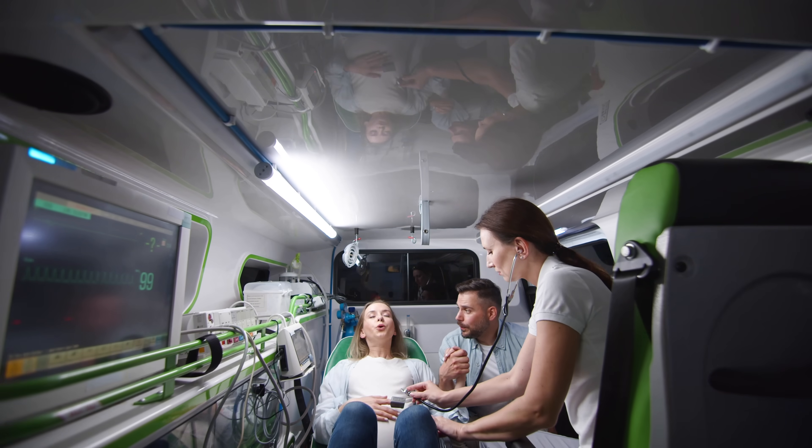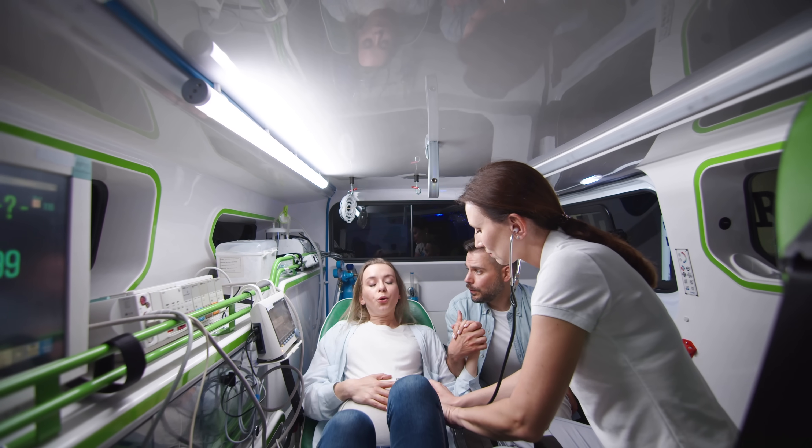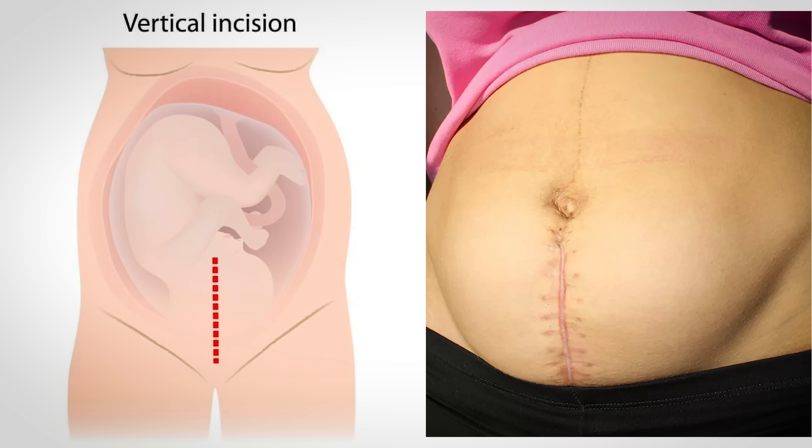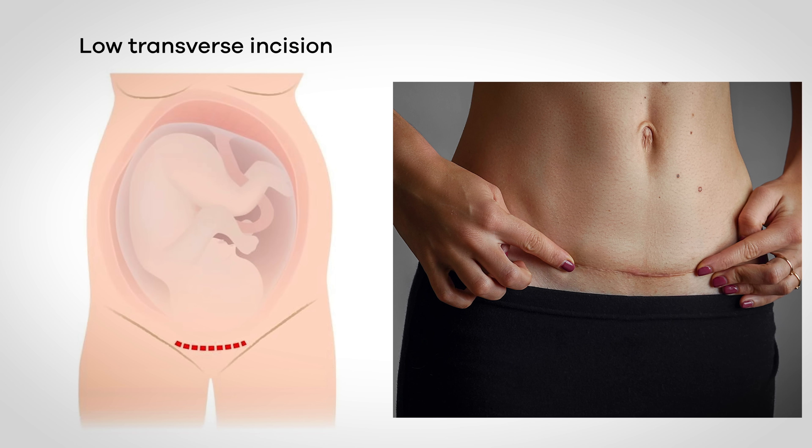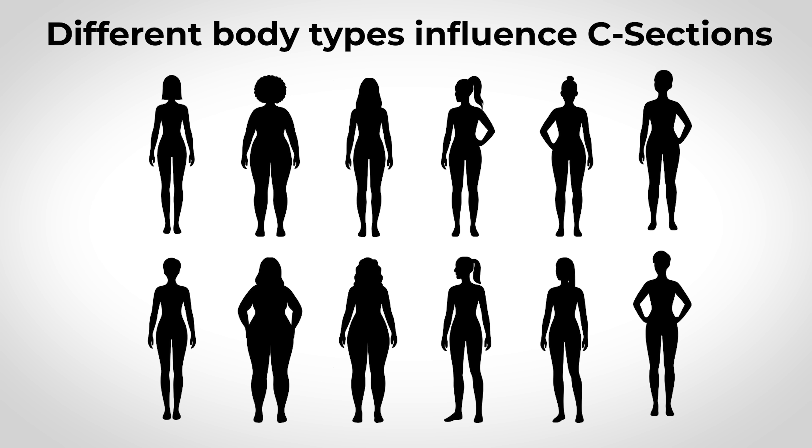There isn't a specific or universal procedure for all C-sections. The type of procedure depends on a variety of factors including the doctor and the circumstances — for example, is it an emergency C-section? If it is to save mom and baby's life, that might lead to a vertical incision for quicker access, compared to a planned C-section where the more typical low transverse incision, often called the bikini line cut, is used. Factors like prior multiple C-sections or body habitus can also play a role.